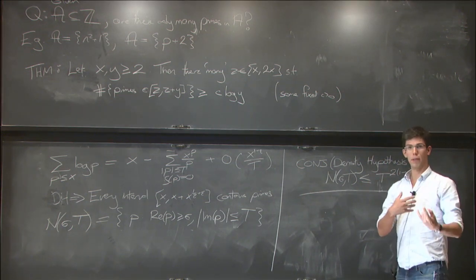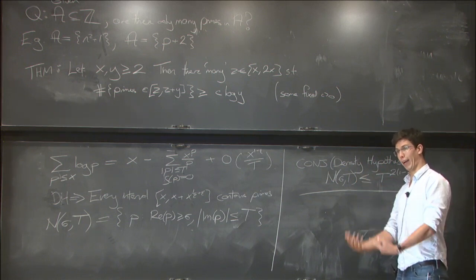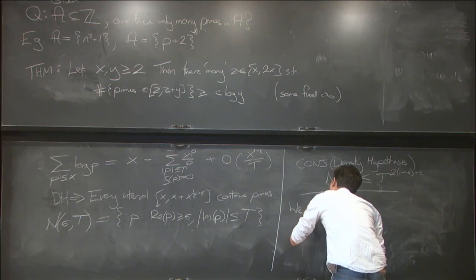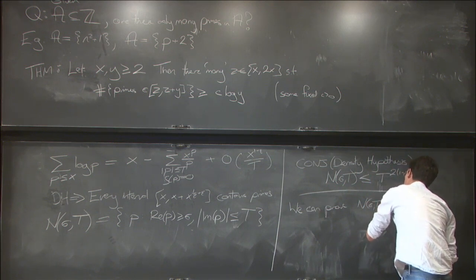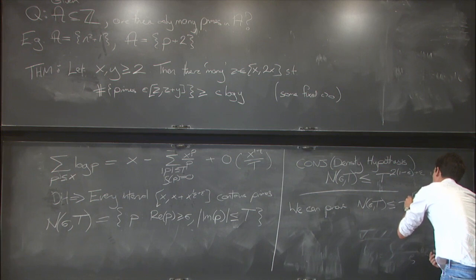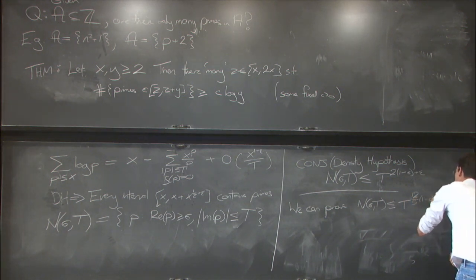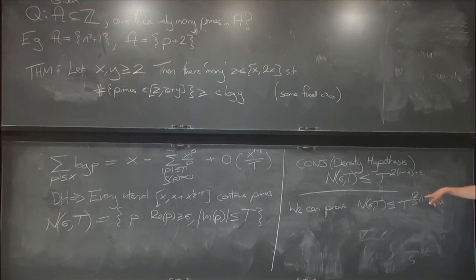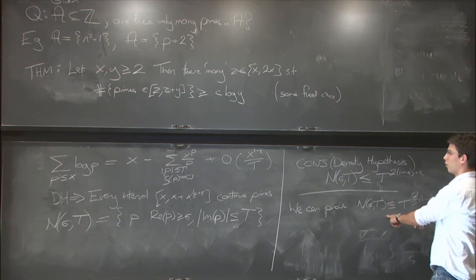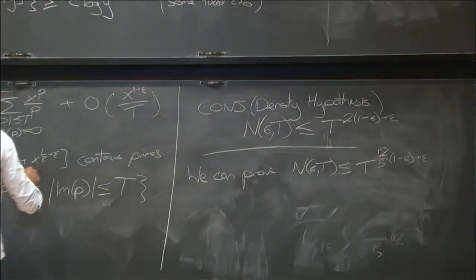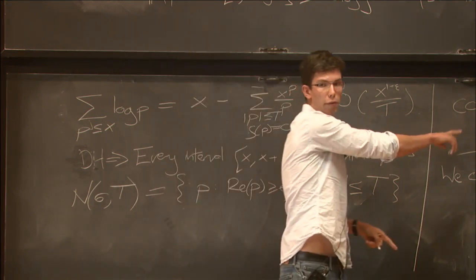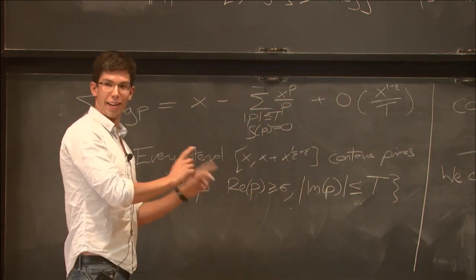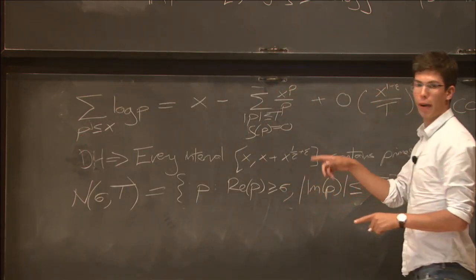But the density hypothesis is something that's much more natural to attempt to prove from the point of view of analytic techniques. So we can prove n of sigma t is bounded above by t to the 12 over 5 times 1 minus sigma plus epsilon. So 12 over 5 is 2.4, so it's only a little bit worse than 2. And correspondingly, if you just assume this as a black box, you do get a result of this type, but instead of getting a half, you get 1 minus 1 over 12 over 5. And here, a half is 1 minus 1 over 2.